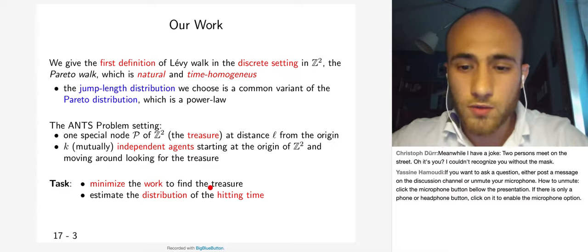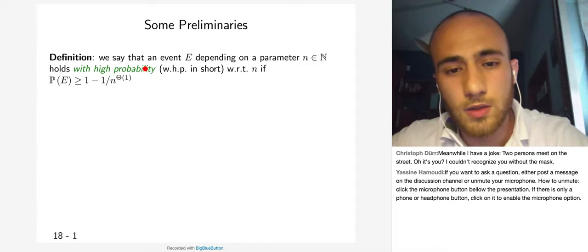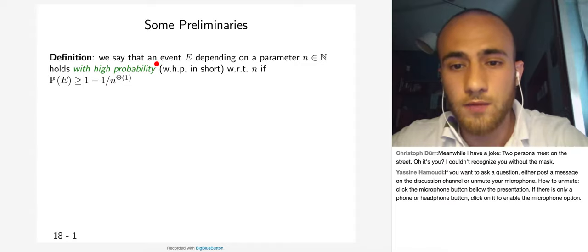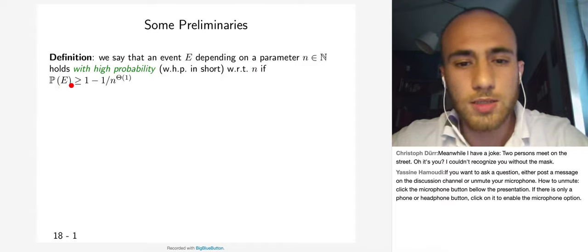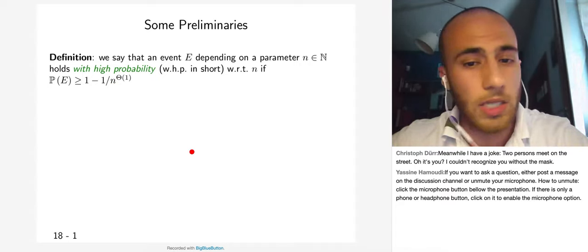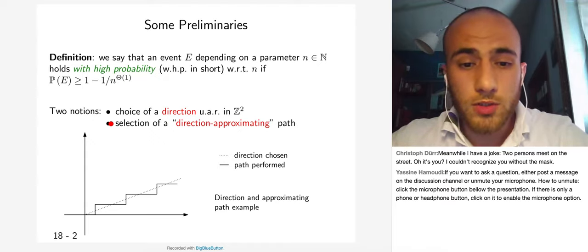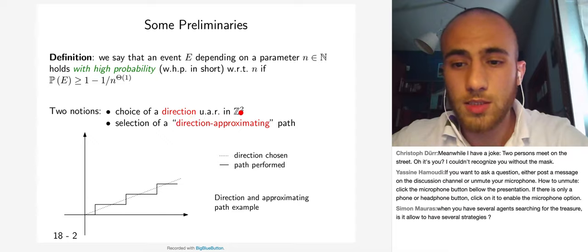The task is to minimize the work to find the treasure and estimate the distribution of the hitting time of the treasure. We are interested in events that hold with high probability: an event E depending on parameter n holds with high probability if P(E) is at least 1 minus the inverse of some polynomial in n.